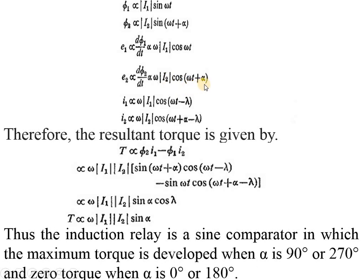e2 can be represented in the same manner: dφ2/dt is directly proportional to ω I2 cos(ωt + α). Whereas i1 ∝ ω I1 cos(ωt - λ).